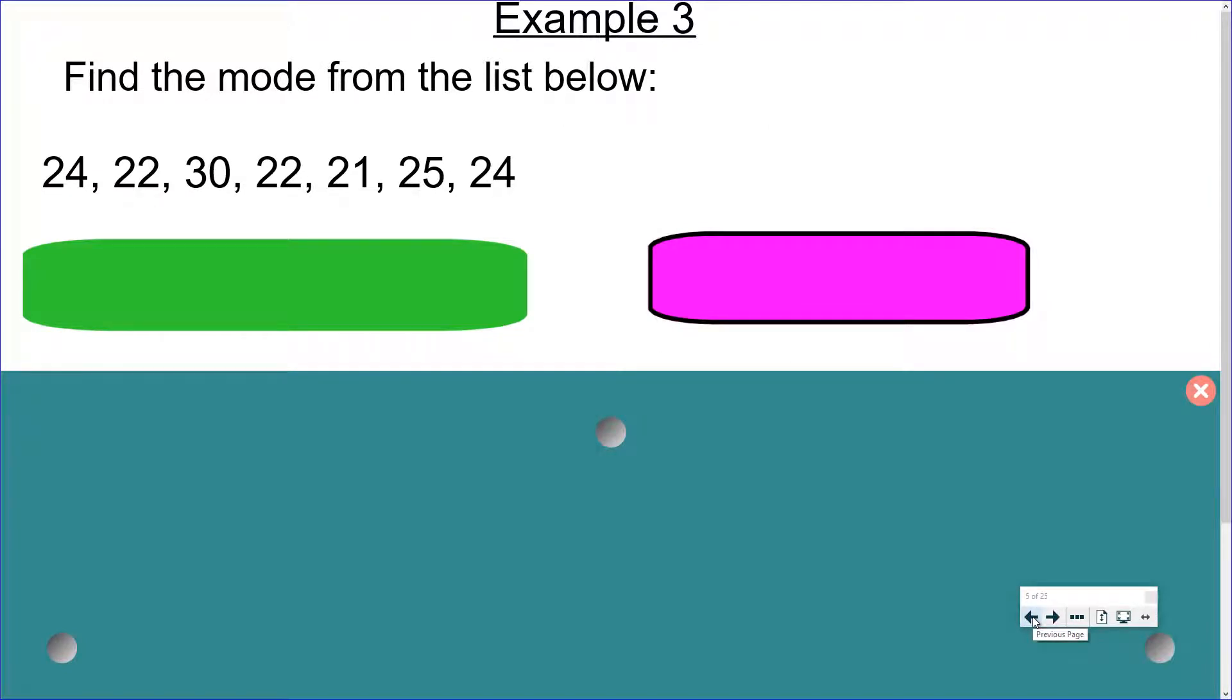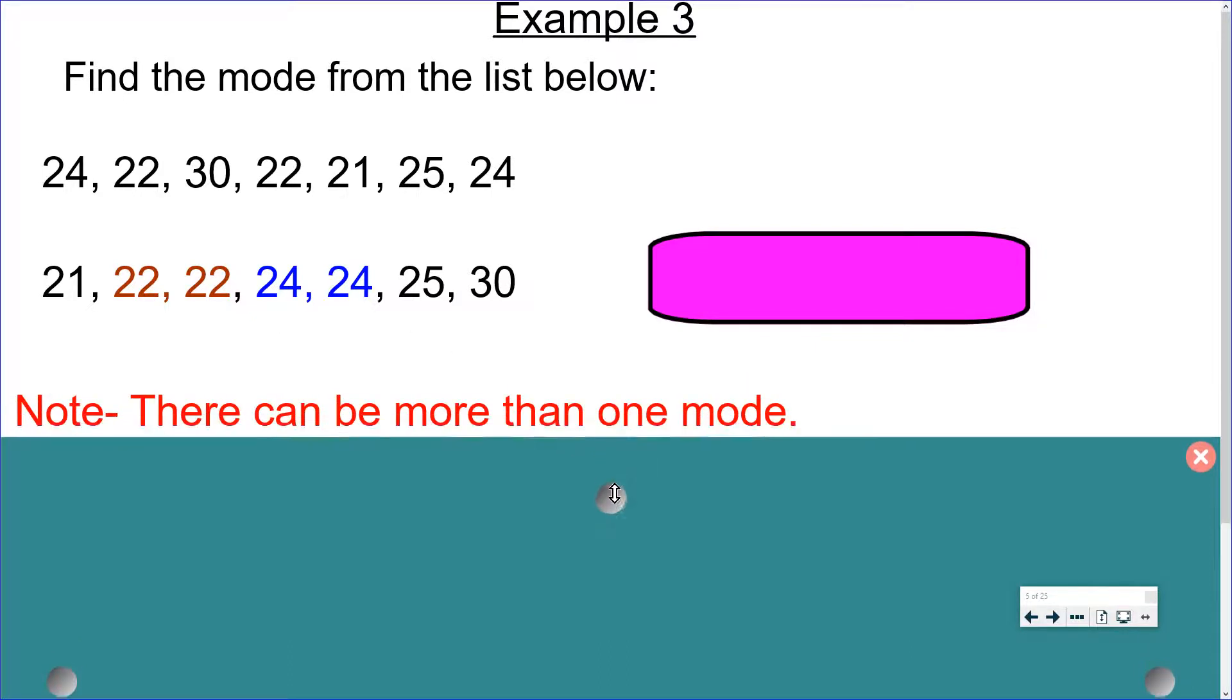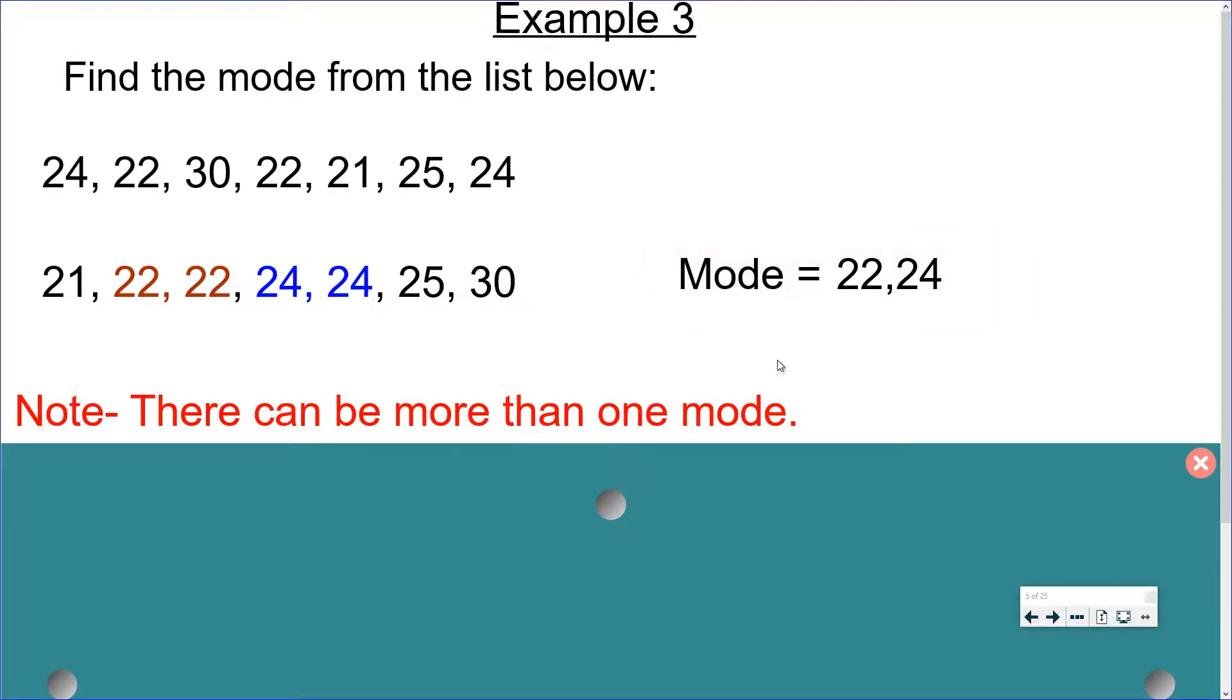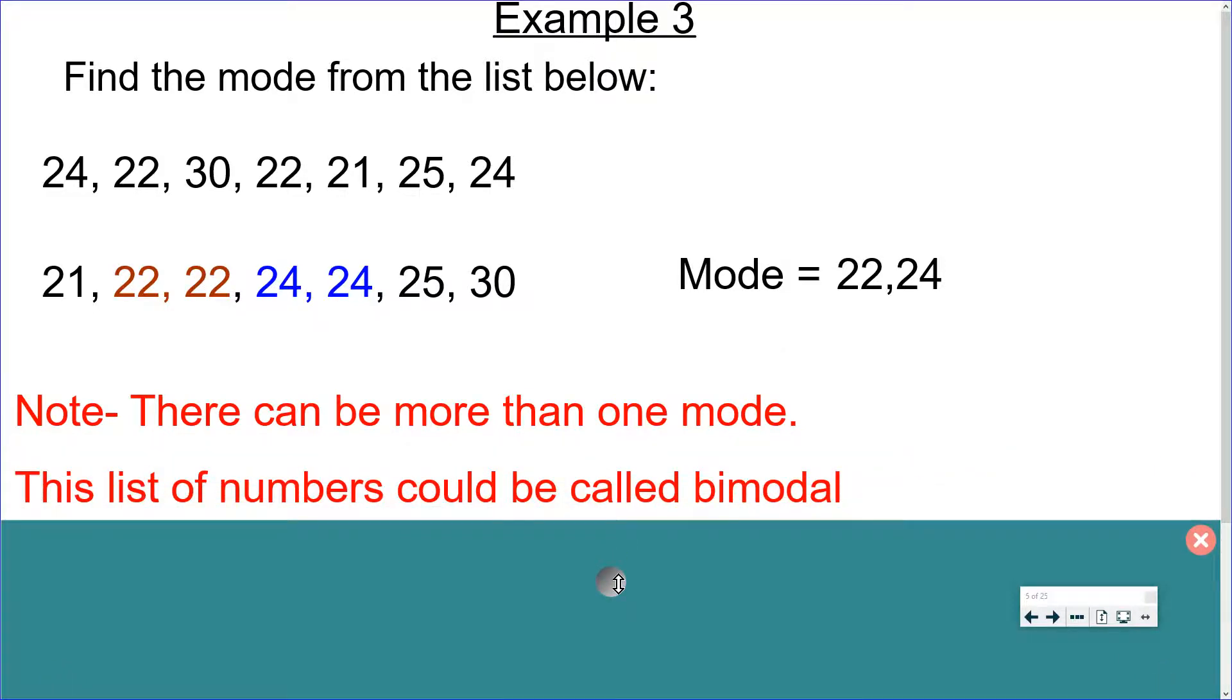Example 3. Find the mode from the list below. This time the numbers aren't in order for us, which makes it a little bit harder. So to help we should put everything in order. But here we can see that 22 occurs twice which is tied with the number 24 which also occurs twice. So both these numbers are contesting the place of being the mode. There can actually be more than one mode. So in this example we could say the mode is 22 and 24. This list of numbers could be called bimodal because it has two modes.